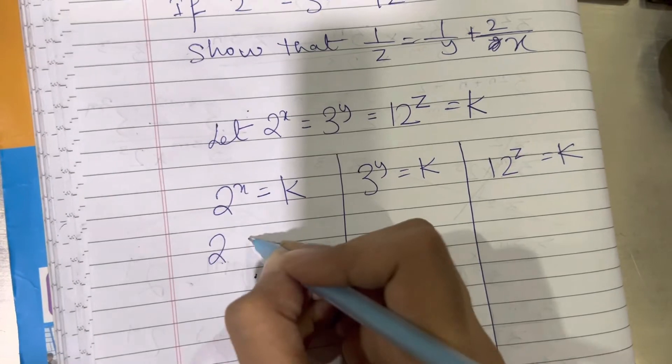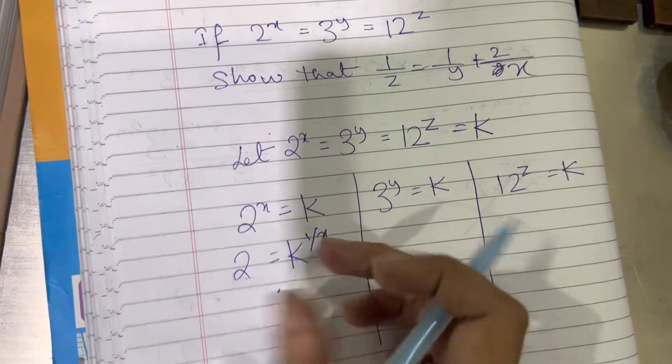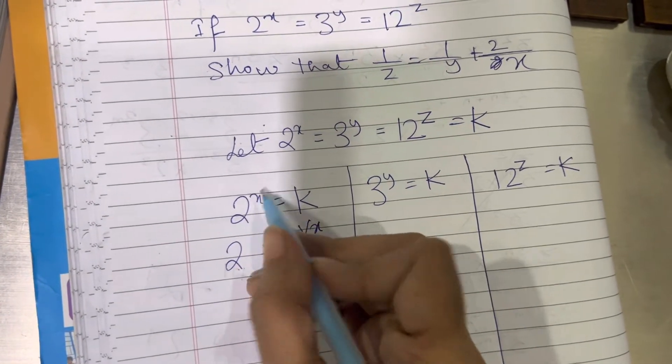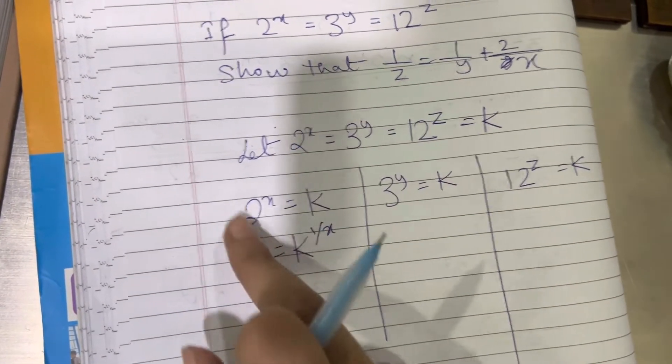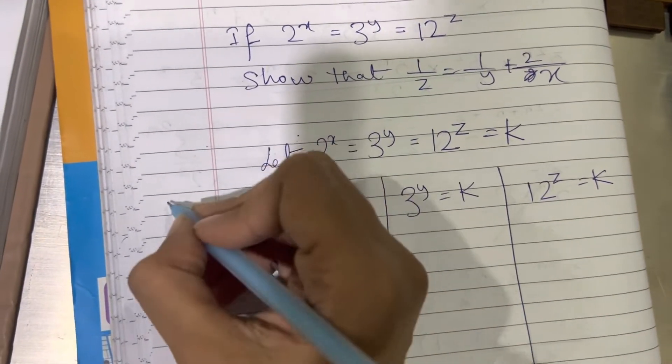Therefore we can write 2 is equal to k to the power 1 by x. This is a general rule. When you want the power to shift from left hand side to right hand side, we just do the reciprocal.